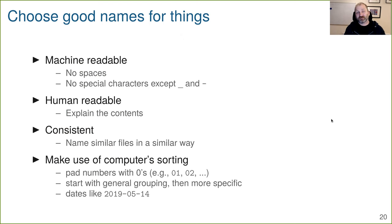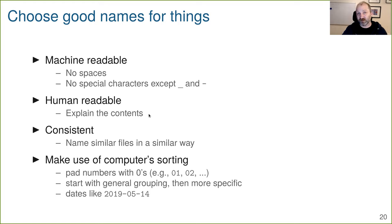Key principles for choosing good names: have names be machine readable — no spaces, no special characters except underscores and hyphens. Have names be human readable so the name explains the contents without having to open the file. Have names be consistent with some system. Make use of how the computer sorts files by name — pad numbers with zeros (figure 01, figure 02) so that 10 comes after 09 rather than between 1 and 2. If you name things with words separated by underscores where initial words give a general grouping, the computer will sort by that general grouping. Dates should always be written as four digits for the year, two digits for the month, two digits for the day.